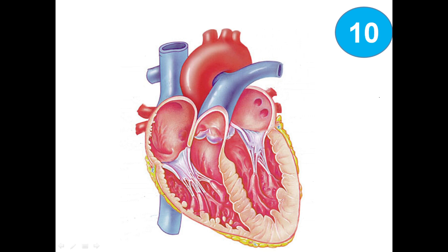Now this is the last picture, showing a section of the heart. Let's talk about the four chambers. This is the left atrium and this is the right atrium — the upper two chambers. We also have the left ventricle and the right ventricle — the lower two chambers.